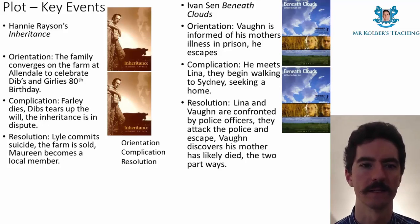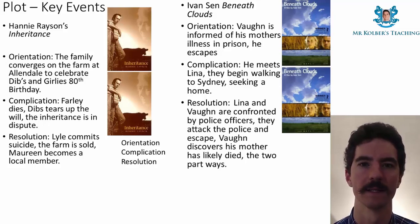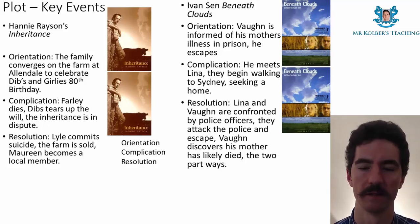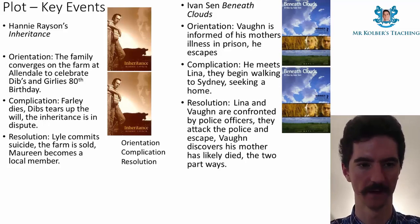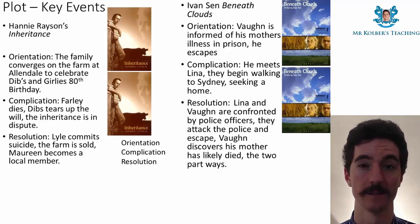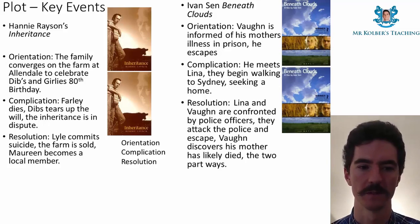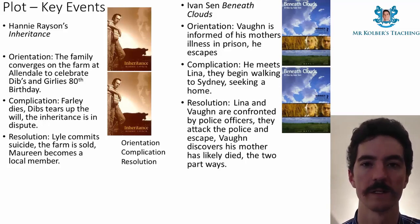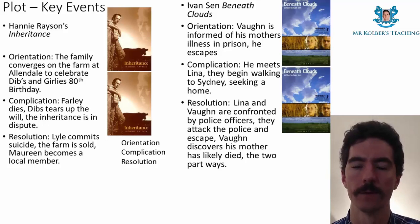For Inheritance: the orientation is the two families converging on the farm at Allendale to celebrate Dib's and Gurley's 80th birthdays. The complication is when Farley dies and the inheritance becomes contested — Dib tears up the will, and the discussion becomes whether Nugget will get it. The resolution is when Lyle commits suicide. In the epilogue, we find out the farm has been sold and Maureen has become a local member, though we don't really know what happened to Nugget or how that decision was reached.